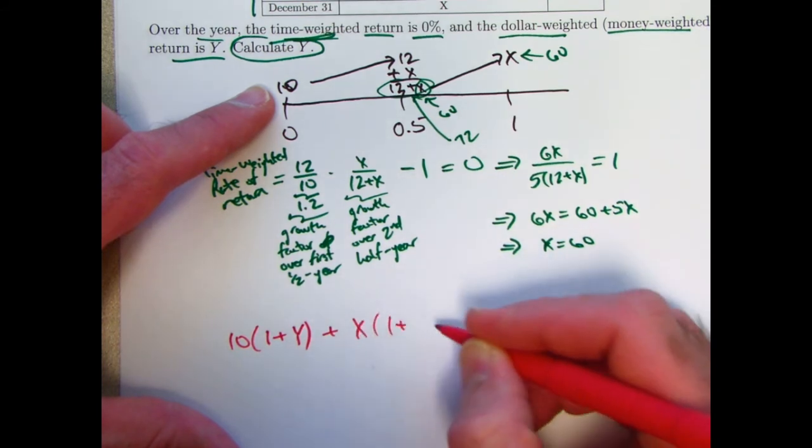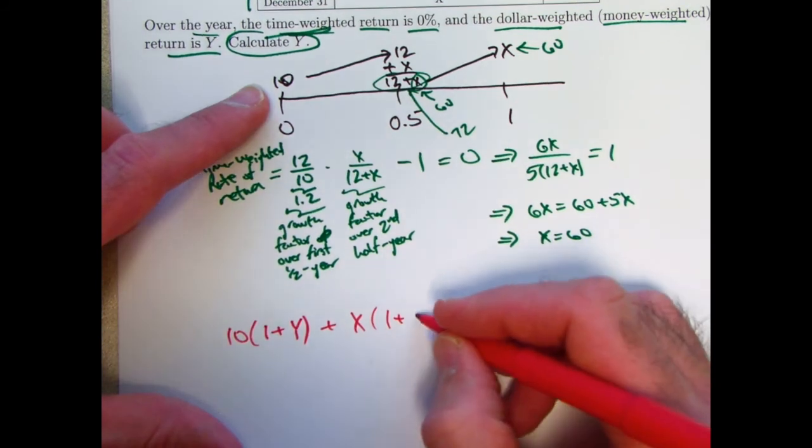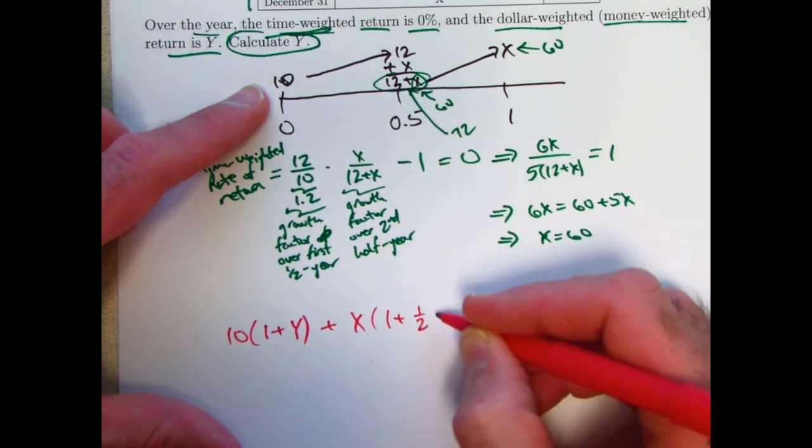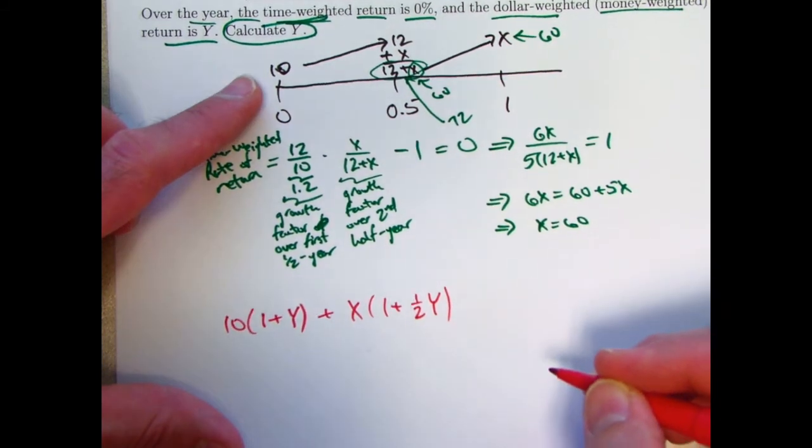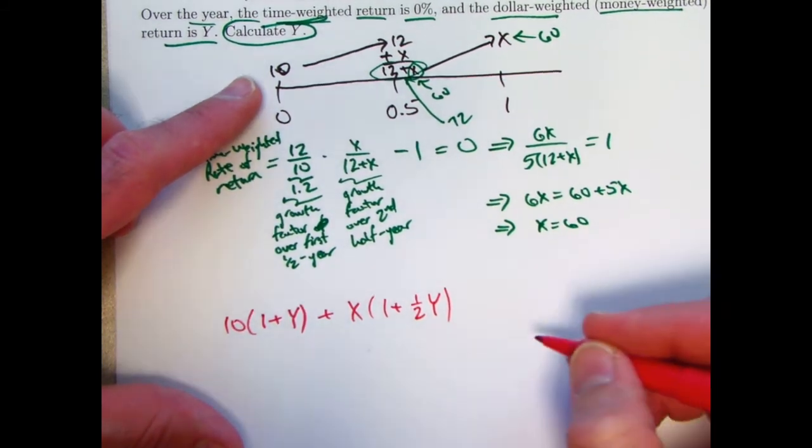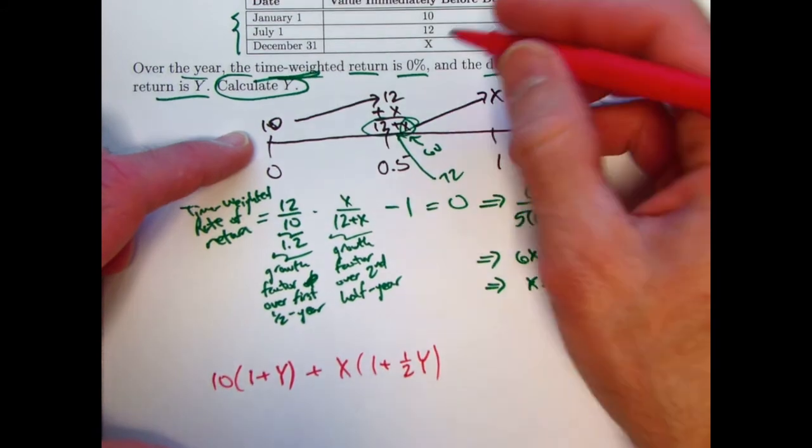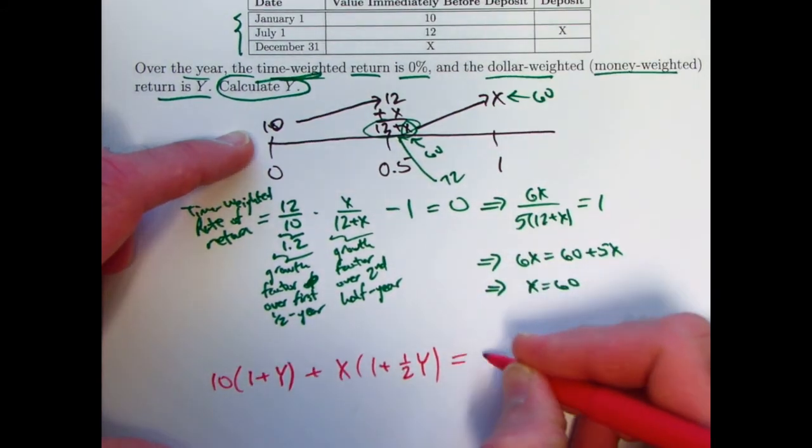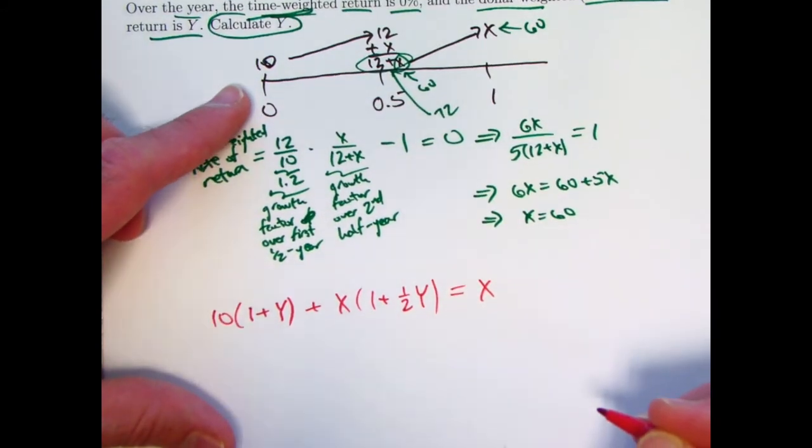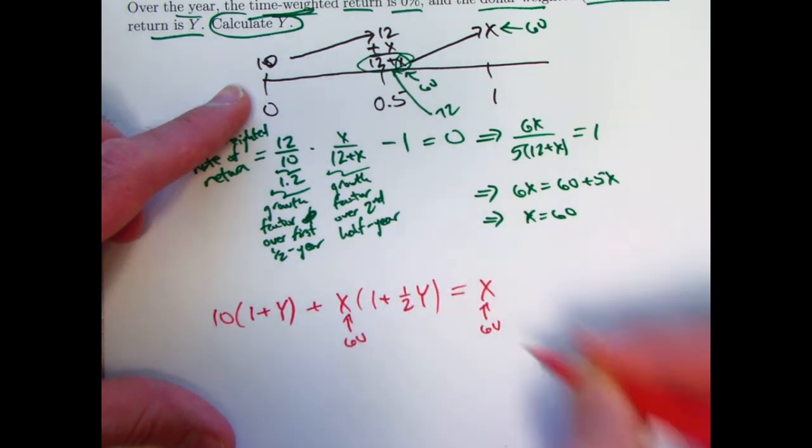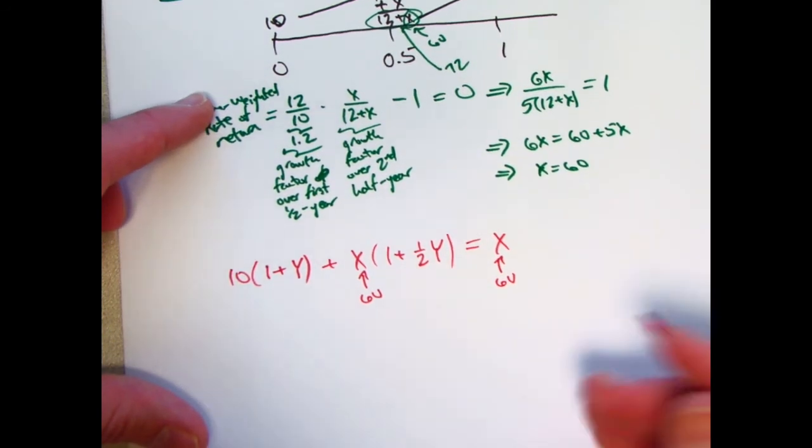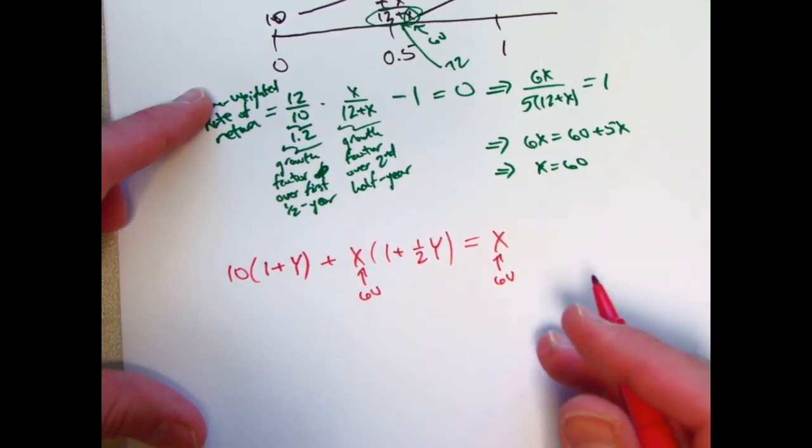So it gets multiplied by 1 plus 0.5 times the interest rate, 0.5 times the dollar-weighted rate of return, 0.5 y. Those amounts have to accumulate to the ending balance, which is x. So this has to set that equal to x and solve for y. We know what x is. x is 60.